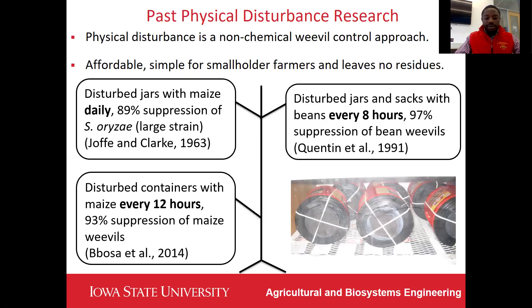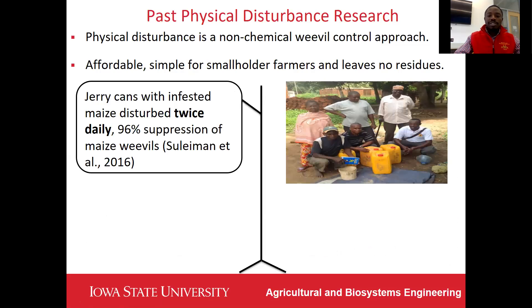In our research group at Iowa State University in 2014, Bosa disturbed recyclable plastic coffee containers every 12 hours, achieving 93% suppression of maize weavers. Recently in Tanzania, Suleiman worked with local farmers to disturb 20-liter jerrycans of infested maize twice a day, achieving 96% suppression of maize weavers.